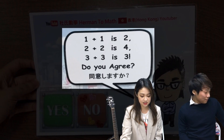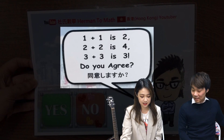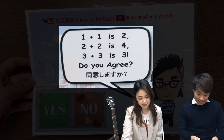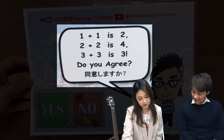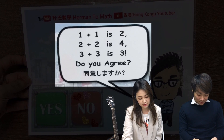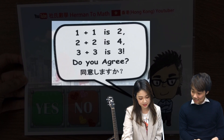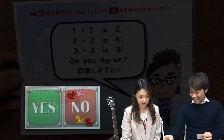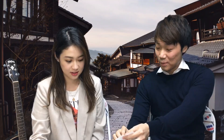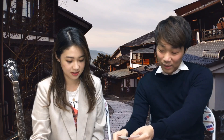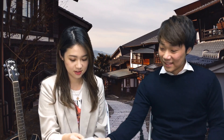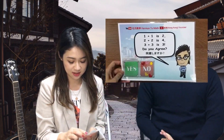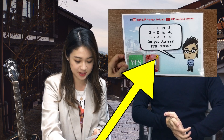Okay, please read the question. 1 plus 1 is 2. 2 plus 2 is 4. 3 plus 3 is 3. Do you agree? You have two options — yes or no? Put a sticker on it. Do you agree? No.